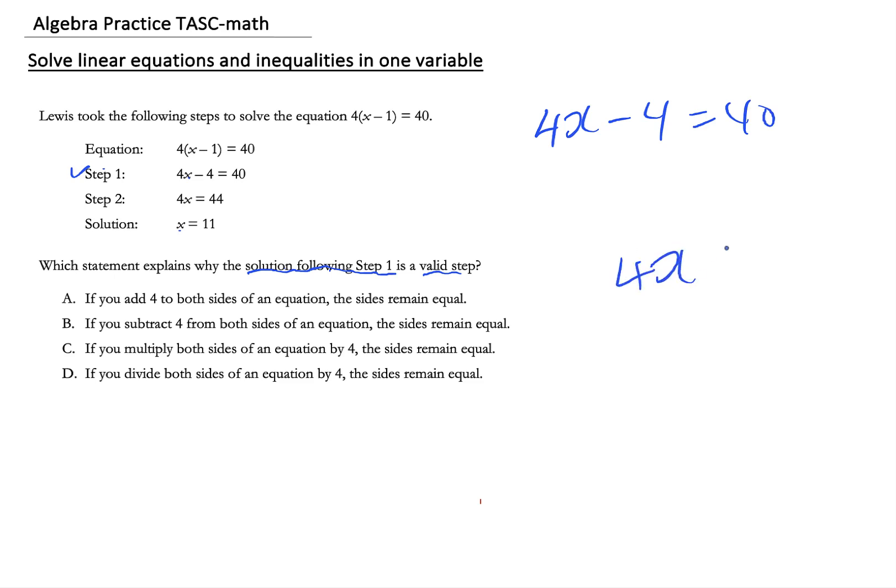How in the world did they do that? In order to do that they got rid of the four, so they added four to both sides. Because they add four to both sides, you get 4x equals to 44. So I'm going to go here and A says if you add four to both sides of an equation, the sides remain equal. So A is your answer. Again you have to read carefully.